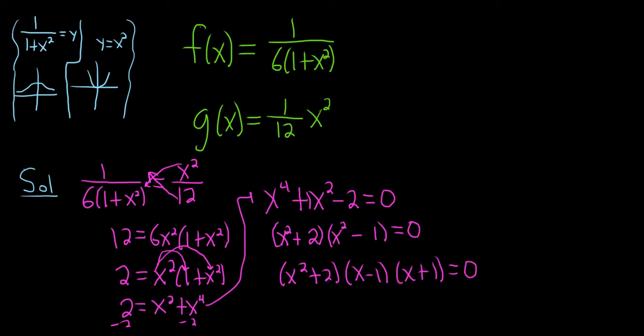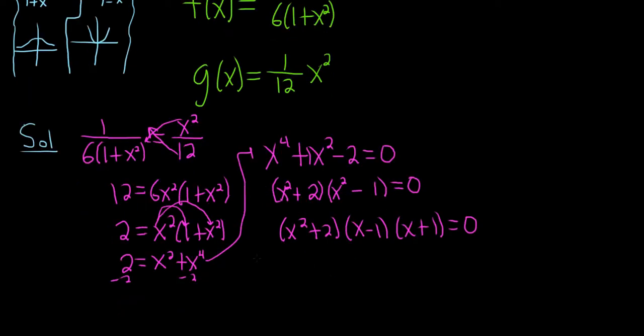So then you're supposed to set each piece equal to 0. So let's go ahead and go through all of those steps. So x squared plus 2 equals 0. x minus 1 equals 0. And then x plus 1 equals 0.